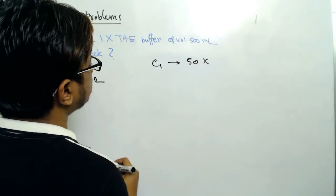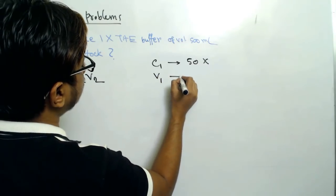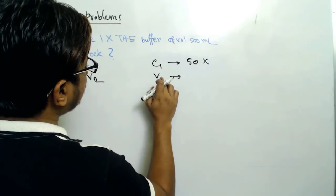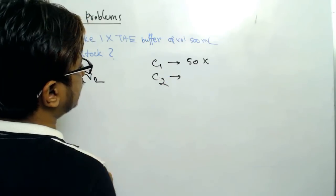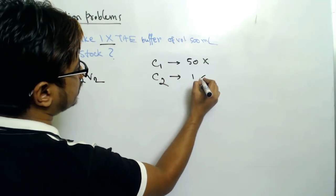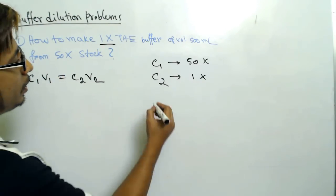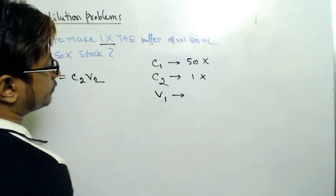So what we can say in this case: C1 is the initial concentration, that is given as 50X, right? And C2 is the end concentration. Our end concentration is also given as 1X. We know both C1 as well as C2.